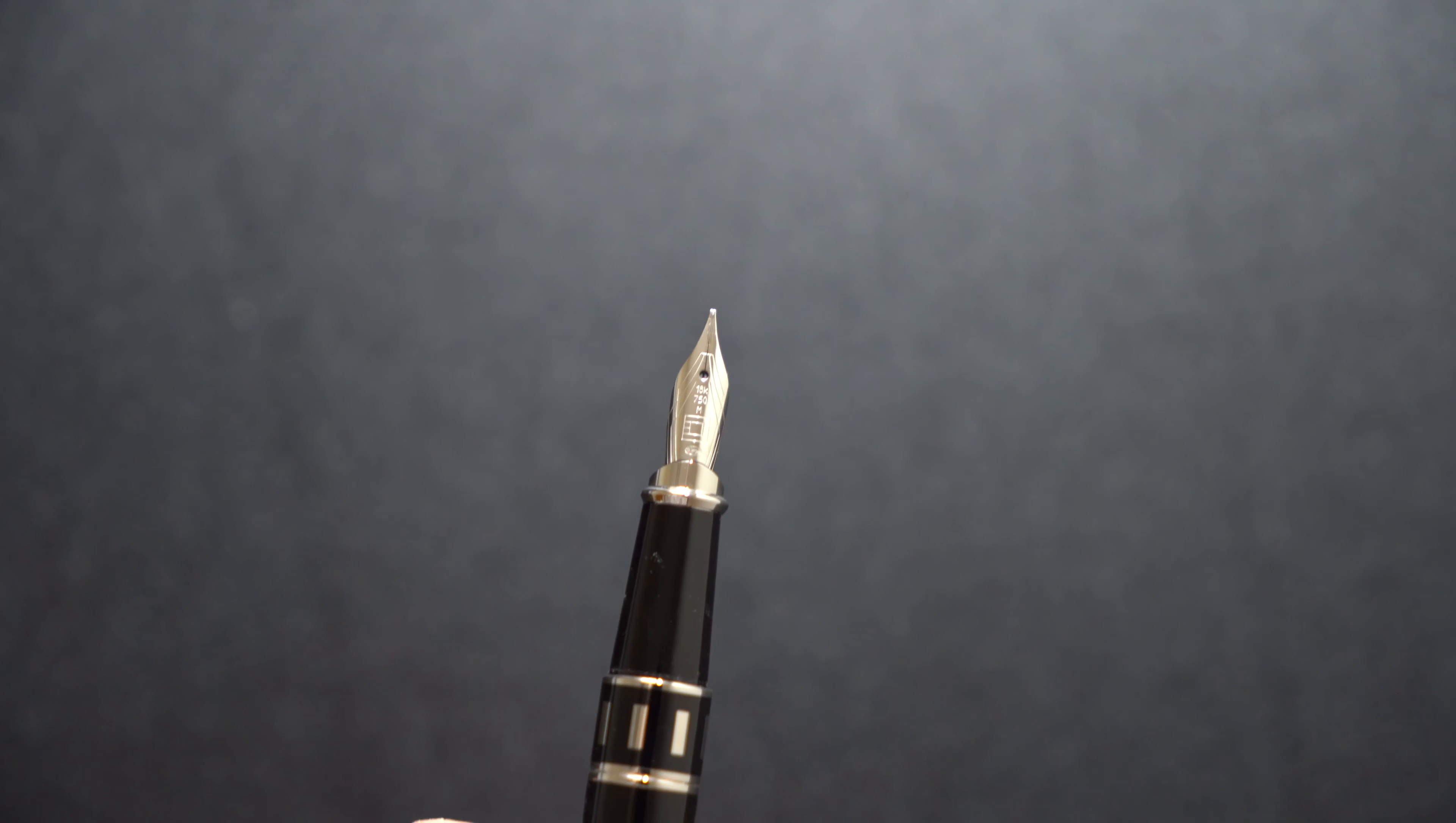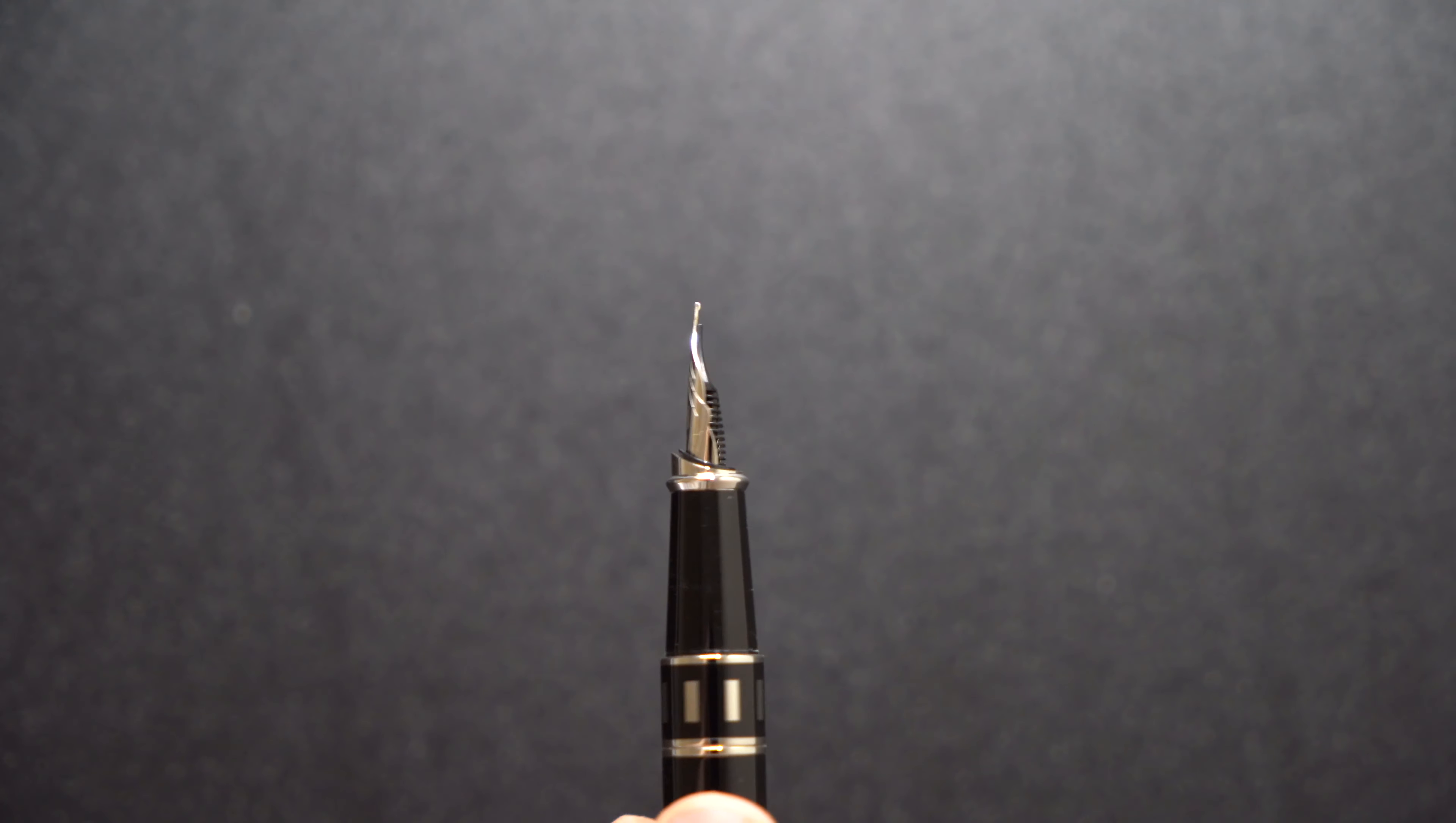The nib is an 18 karat gold nib. It's a medium nib. You have plastic feed and you have a scribble hood which is specific to ST Dupont as far as I know.